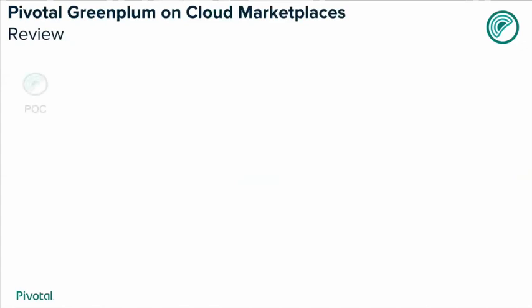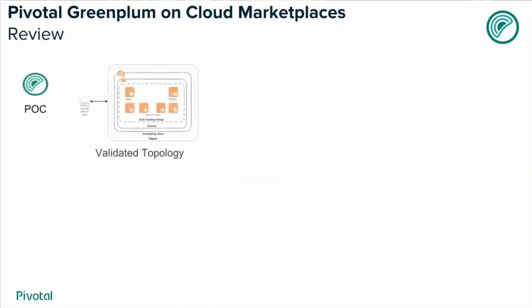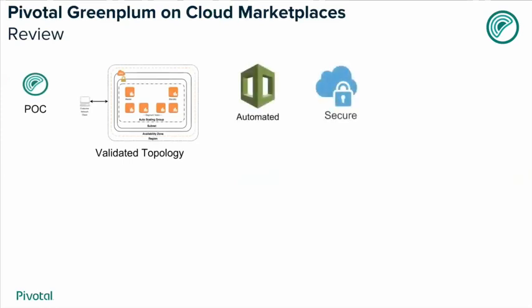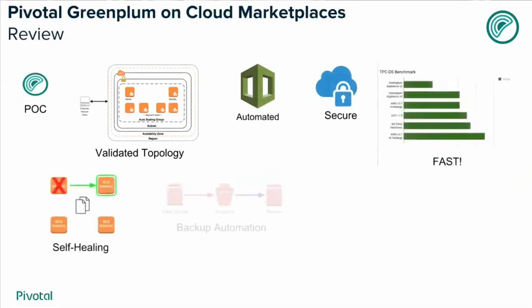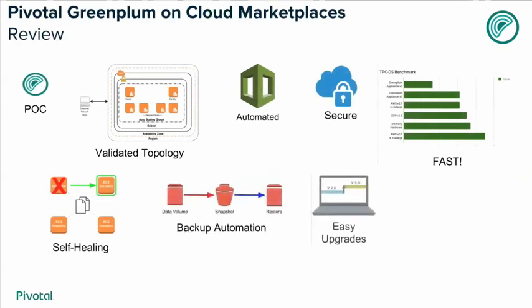To review: Greenplum on the cloud is great for proof of concepts and even production. You know it has a validated topology, it's automated using automation tools, it's secure, and it's going to be very, very fast. It has cool features like self-healing, backup automation through GPSnap, and upgrades are now much easier using GP upgrade. And we have Pivotal Web Services, which is another way for developers to start using Greenplum.